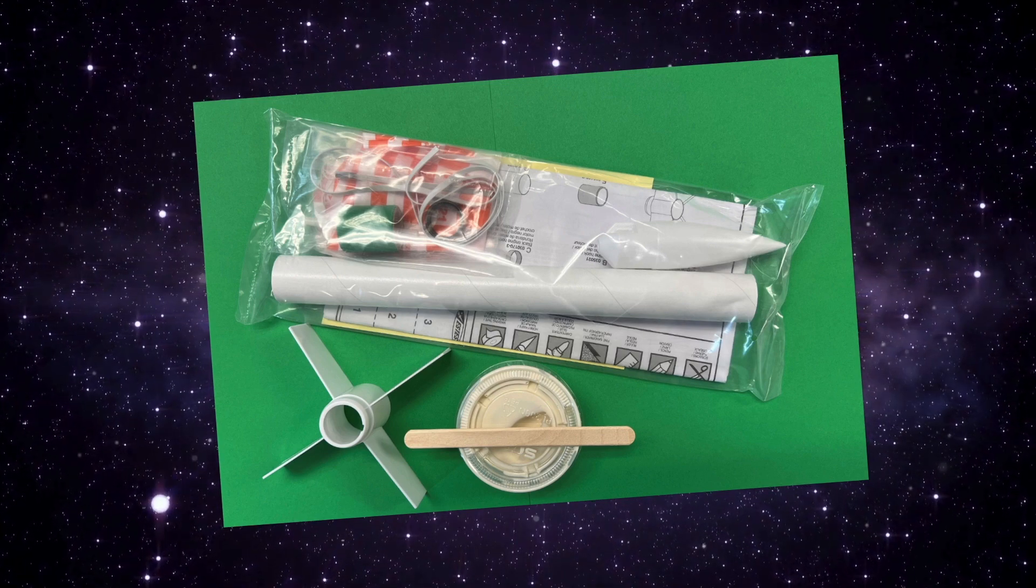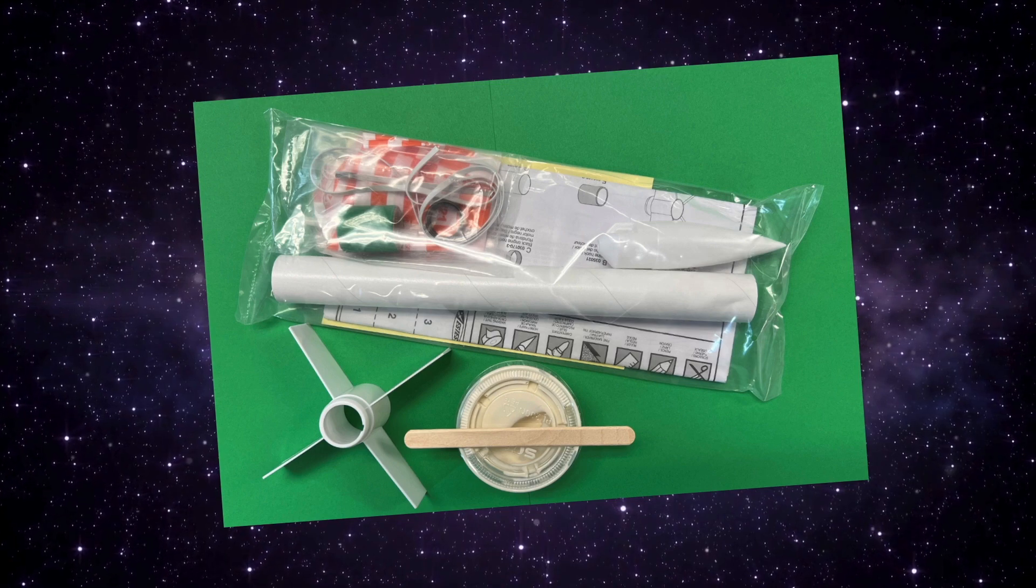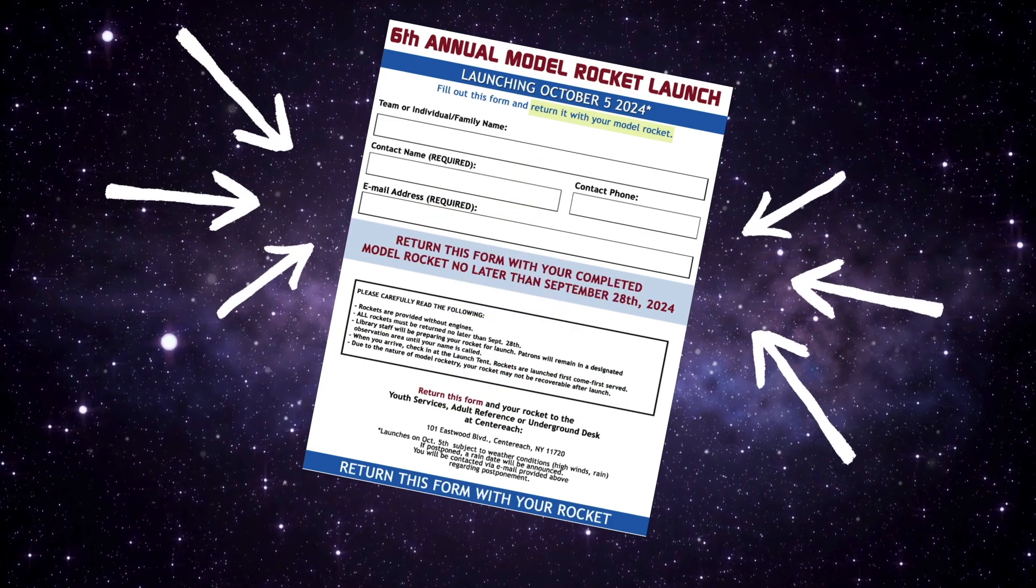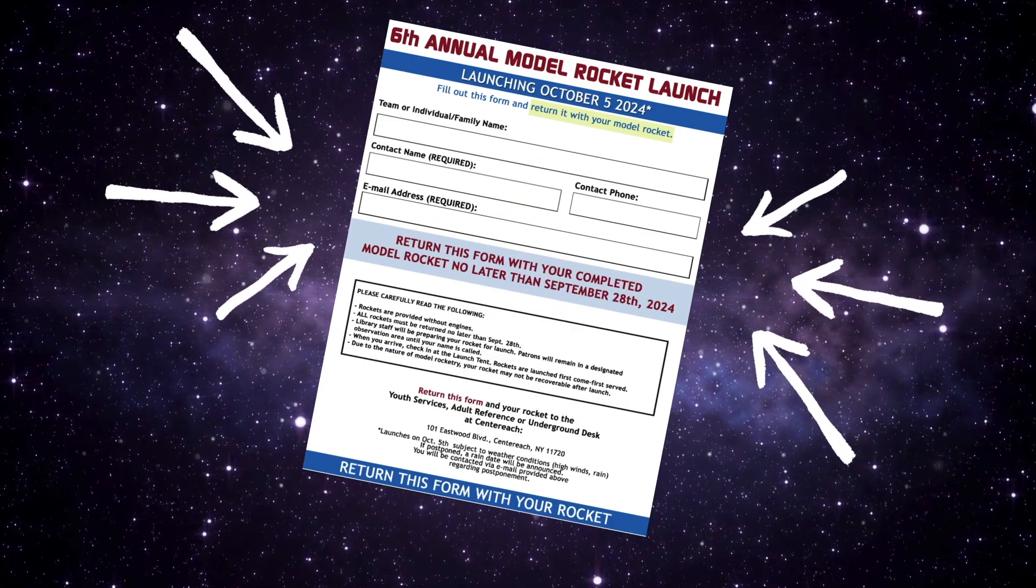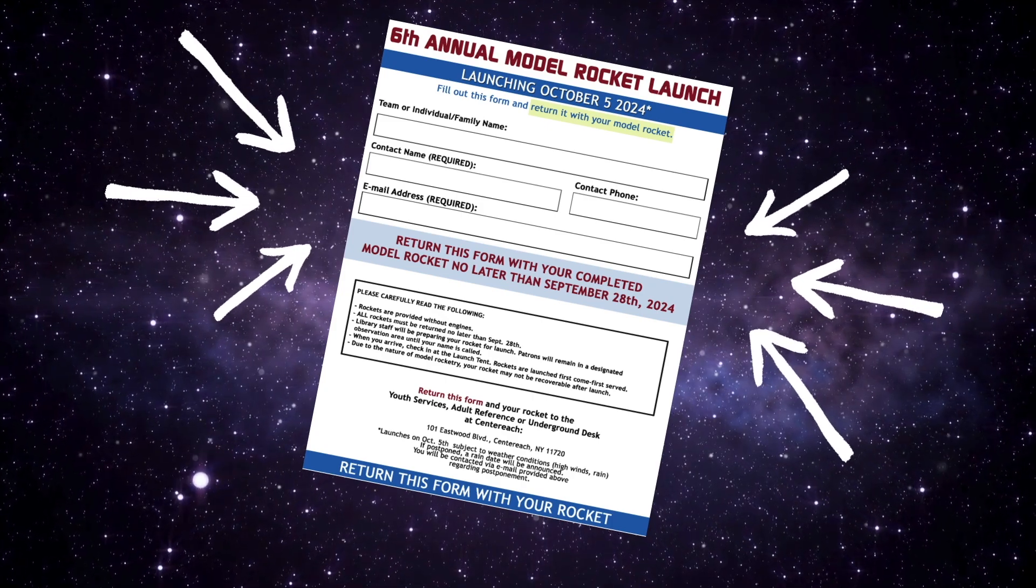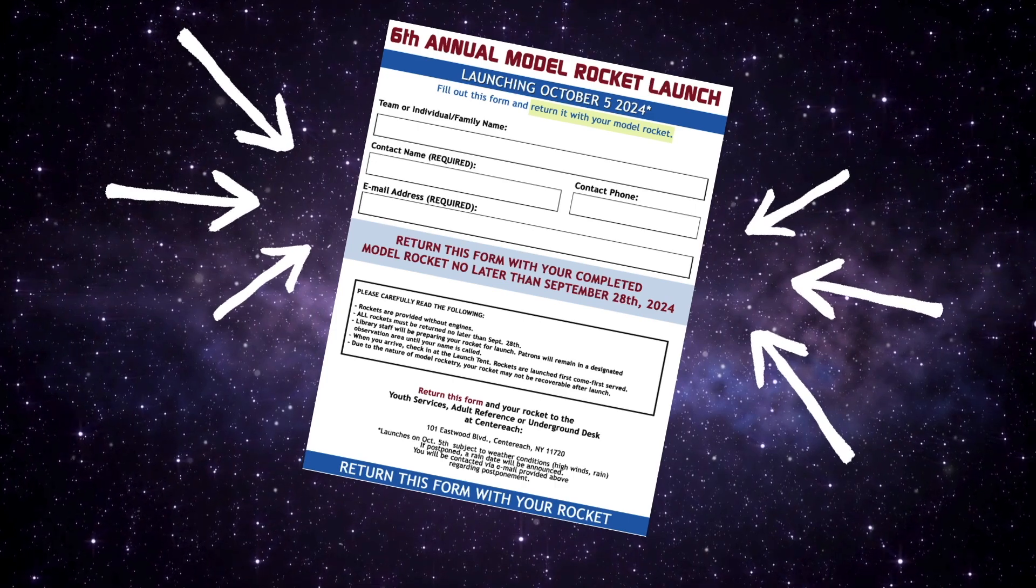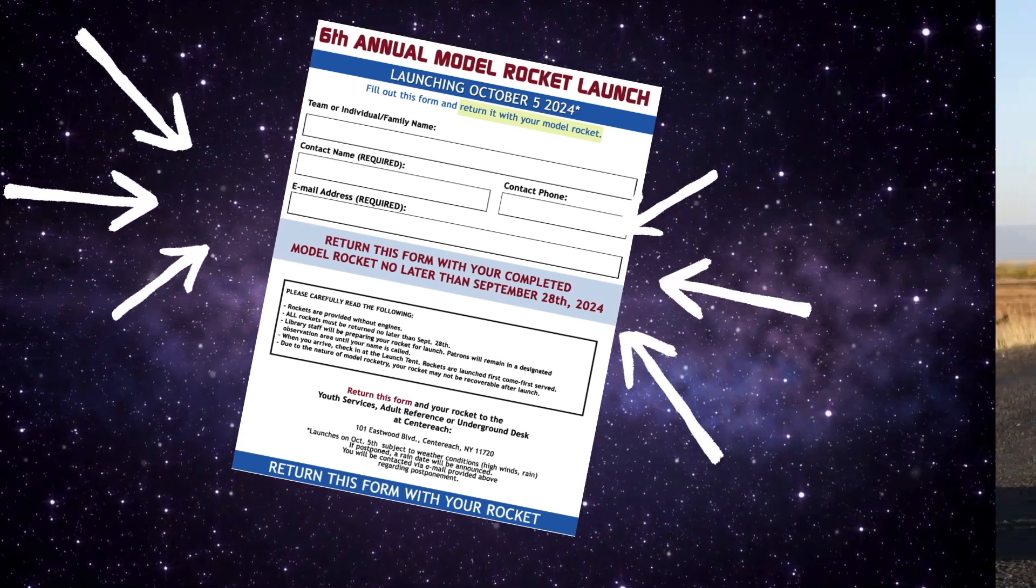If you are one of the lucky ones to get a model rocket kit, inside you'll find your SD's E2X rocket kit, a fin, and some glue. You'll also find the launch application. Please read it carefully and don't forget to save your bag. You'll need to fill out this form and return it with your completed model rocket in your bag no later than September 28th to the center each building.